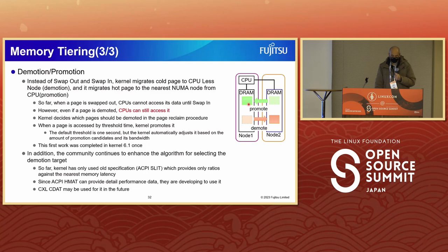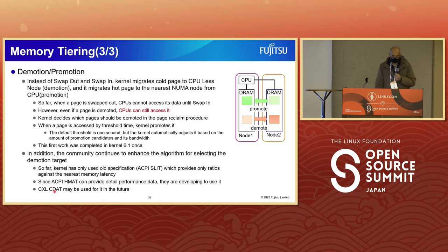The community continues to enhance the algorithm for selecting demotion targets. So far, the kernel used only ACPI SLIT, which provides only ratios against the nearest memory latency. Since ACPI HMAT can provide detailed performance data, they are being developed to use it. CXL also has more effective performance information via CDAT, which may be used in the future.